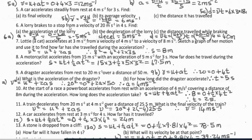Question 6: a lorry brakes to a stop from 20 meters per second in 4 seconds. Part A — acceleration: change in speed divided by time equals 0 minus 20 divided by 4, giving minus 5 meters per second squared. Part B — deceleration: the negative of the acceleration, so plus 5 meters per second squared. Part C — distance while braking: average speed times time, where average speed is (u + v)/2. That gives (20 + 0)/2 times 4 equals 40 meters.